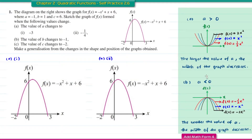For part b, quadratic functions with a less than 0 (negative): this is the graph. The smaller the value of a — in this example from -1/2 to -1 and to -2 — the width of the graph decreases.